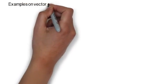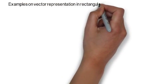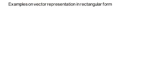In this lecture we'll discuss some examples of vector representation in IJK form, and we will see what is the meaning of these vectors in terms of their magnitude and direction.